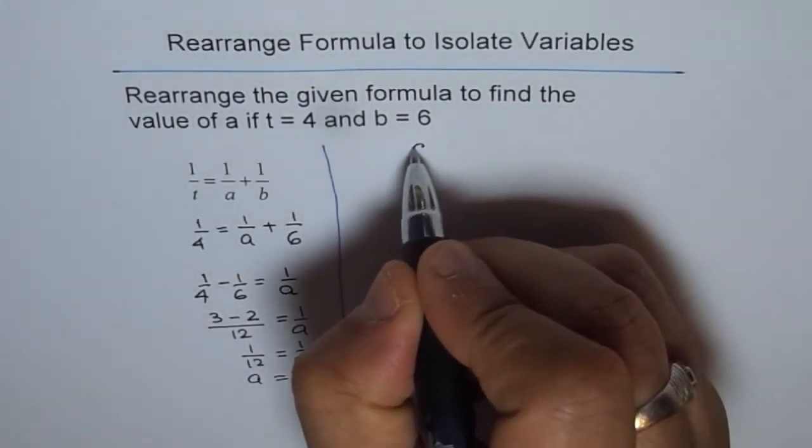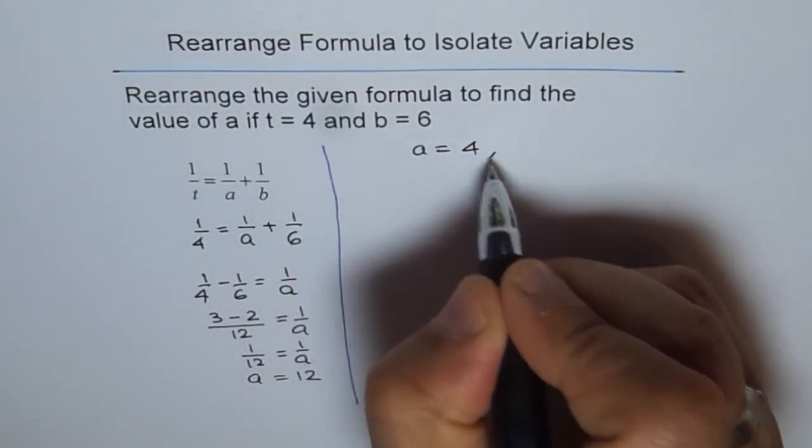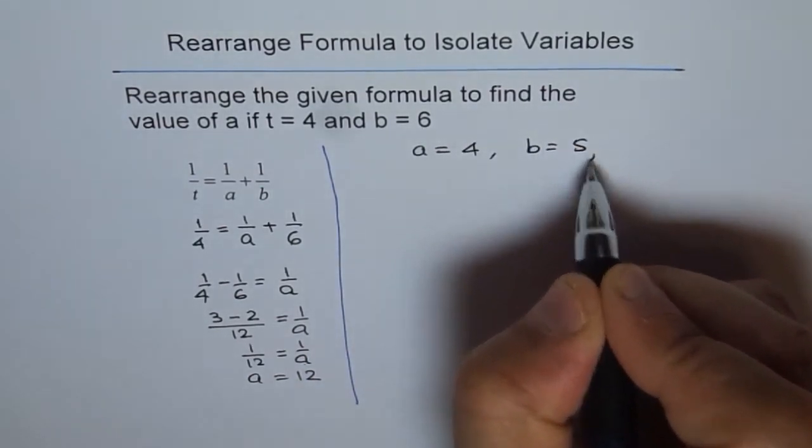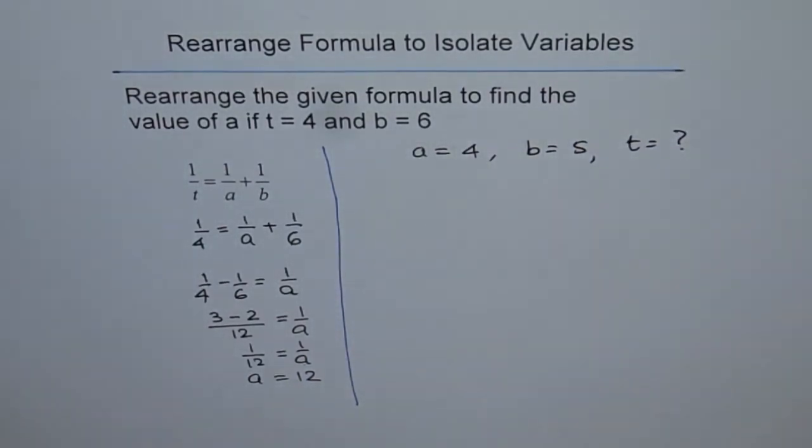Now for you, I will give you: if A equals 4 and B equals 5, find what T is. Try this out.